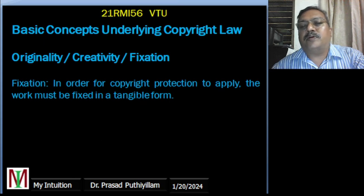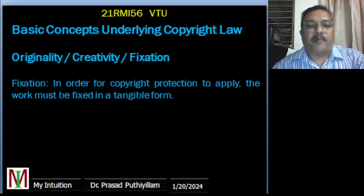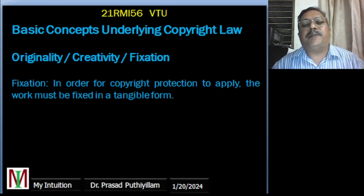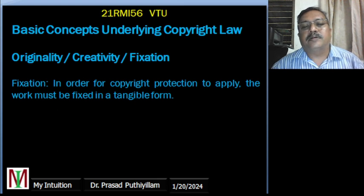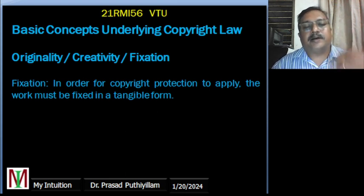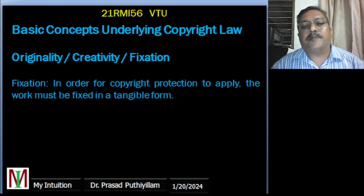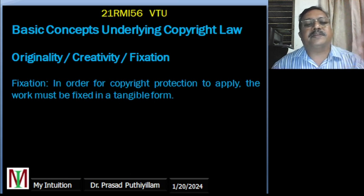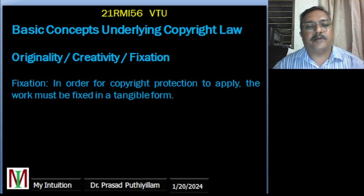Fixation: in order for copyright protection to apply, the work must be fixed in a tangible form. For copyright purposes, tangible form means it has to be recorded or saved in a medium that can be reproduced or perceived — such as a written manuscript, a recorded song, a digital file, or a sculpted artwork. For instance, if you compose a song and record it on a compact disc or save it as an audio file, it becomes a fixed work. Fixation is the minimum basic requirement to apply for copyright.